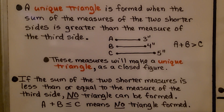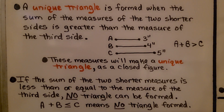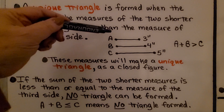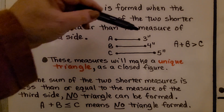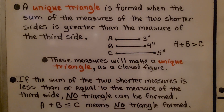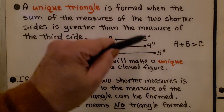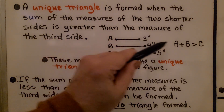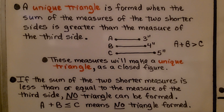A unique triangle is formed when the sum of the measures of the two shorter sides is greater than the measure of the third side. So if we had line segments A, B, and C — three inches, four inches, and five inches — we could say A plus B is greater than C. These measures will make a unique triangle as a closed figure, because 3 plus 4 is 7, and that is greater than 5. If the sum of the two shorter measures is less than or equal to the measure of the third side, no triangle can be formed.